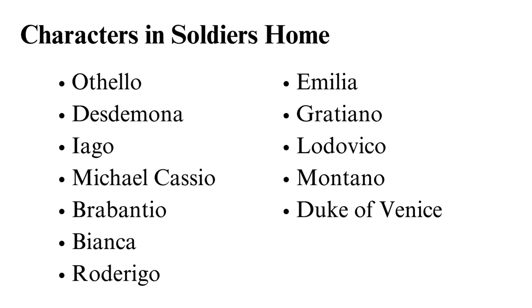Brabantio is Desdemona's father and is described as a self-important Venetian senator who feels betrayed after Othello marries his daughter in secret. Bianca is Cassio's lover and a local courtesan. Cassio often teases her and promises marriage.